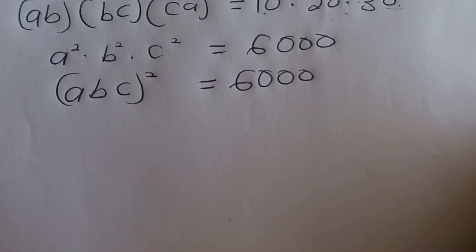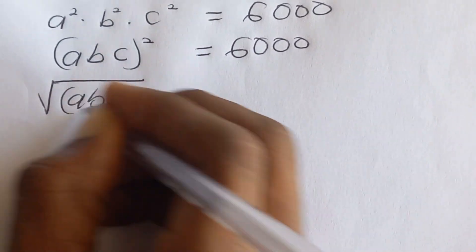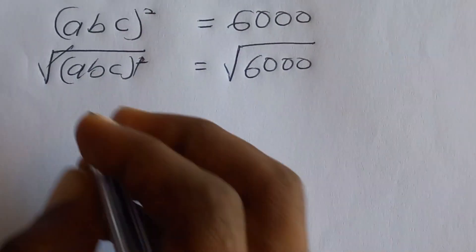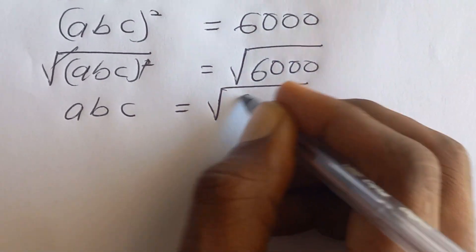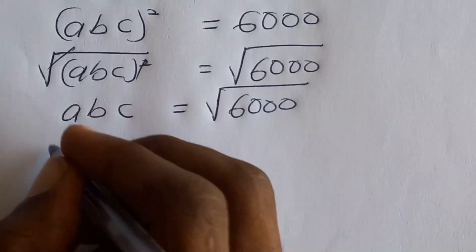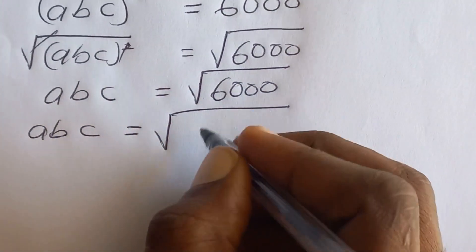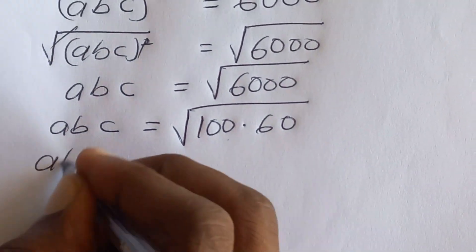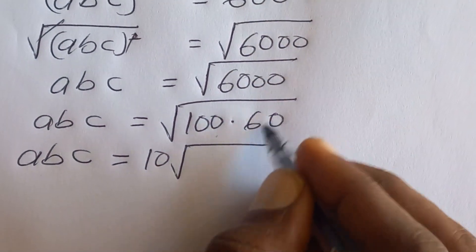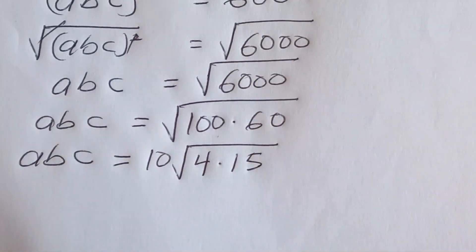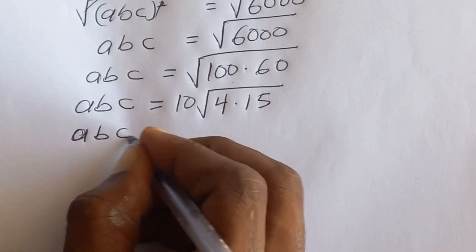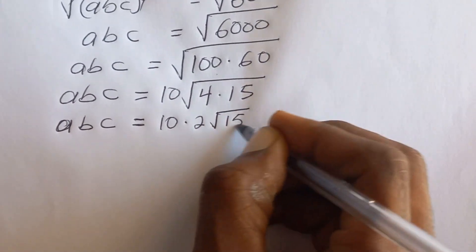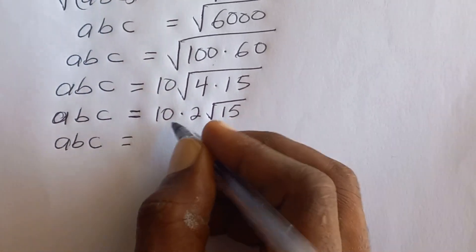Now we take the square root of both sides: (abc)² equals 6000, so abc equals the square root of 6000. We can express 6000 as 100 multiplied by 60. The square root of 100 is 10, and 60 equals 4 times 15, so abc equals 10 times 2 times the square root of 15, giving us abc equals 20√15.